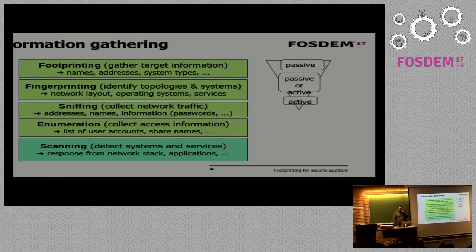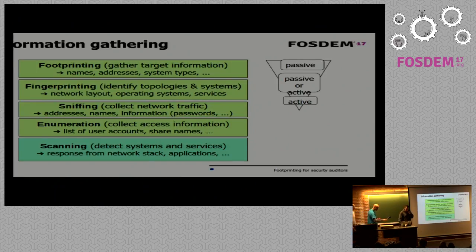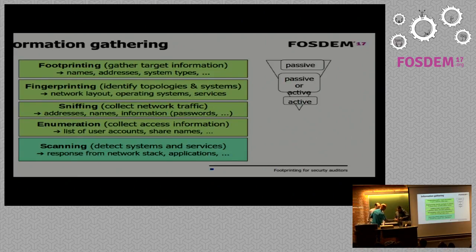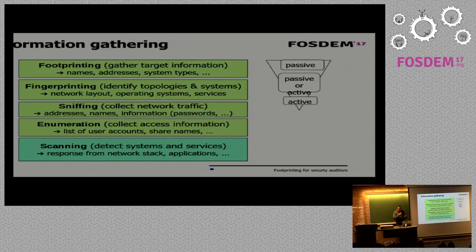The objective of the information gathering phase is to gather all information — names, addresses, systems, types, operating systems, and so on. The goal is to obtain this information in a passive, non-intrusive way.